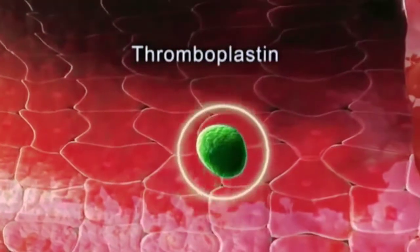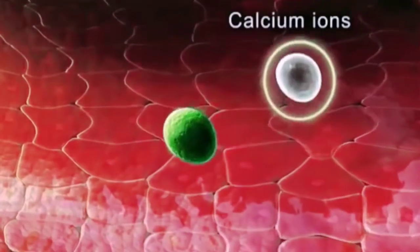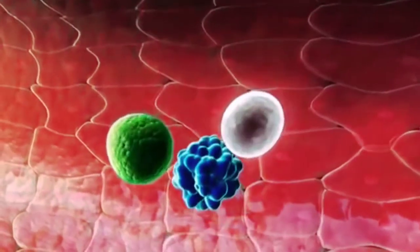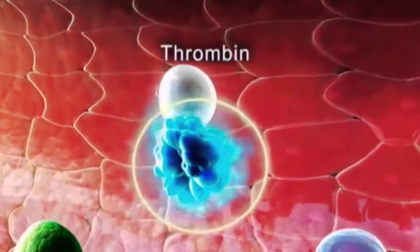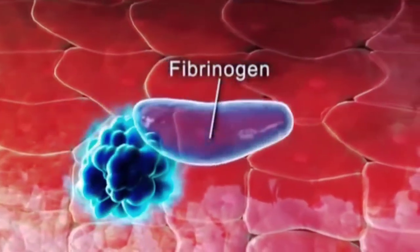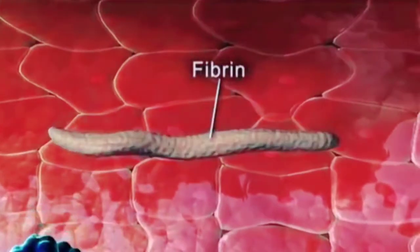In the presence of thromboplastin and calcium ions, the prothrombin present in the blood gets converted into thrombin. This thrombin now catalyzes the conversion of fibrinogen into fibrin.